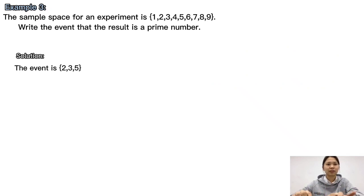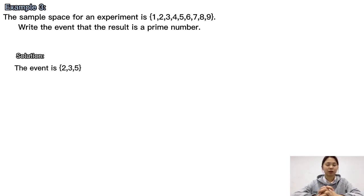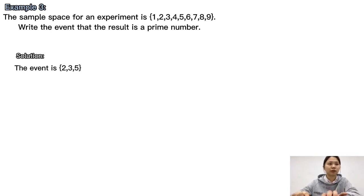Third example: The sample space for an experiment is the set {1, 2, ..., 9}. Write the event that the result is a prime number. A prime number is a number divisible only by itself and 1. Therefore, the event is the set {2, 3, 5, 7}.